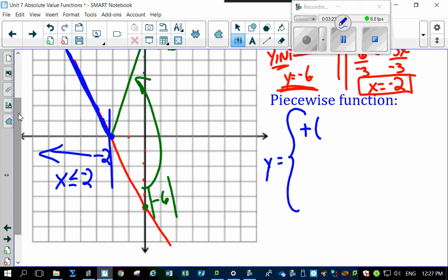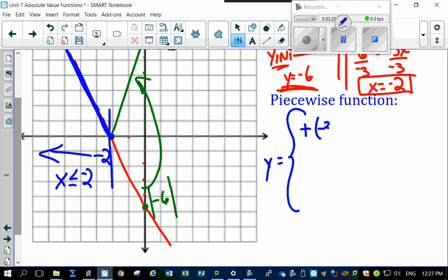Minus 3x minus 6. The original part of minus 3x minus 6 happened when x was less than or equal to minus 2.